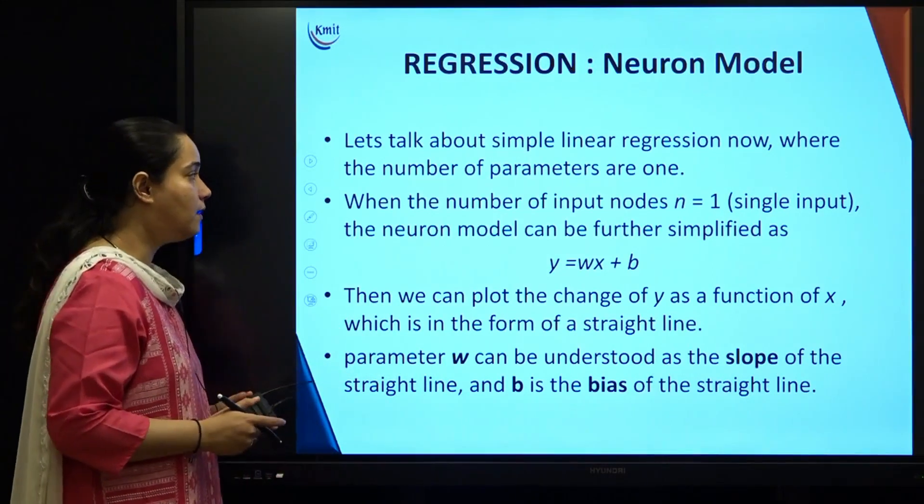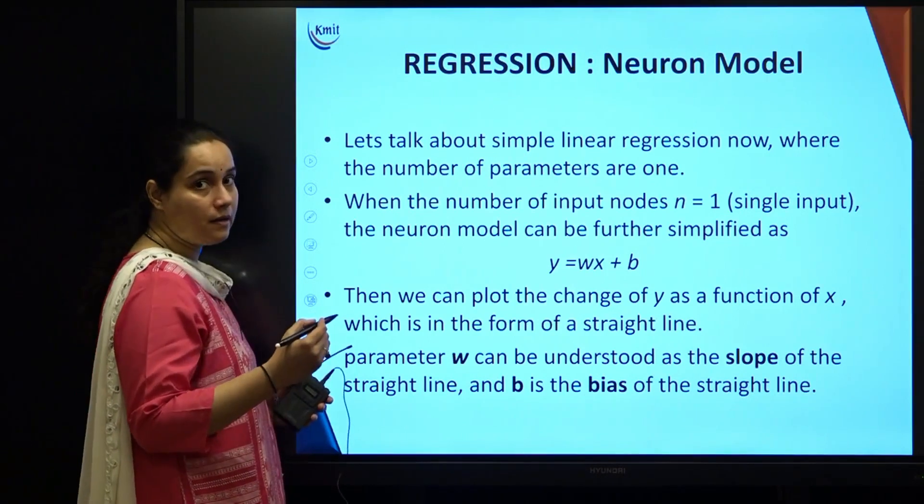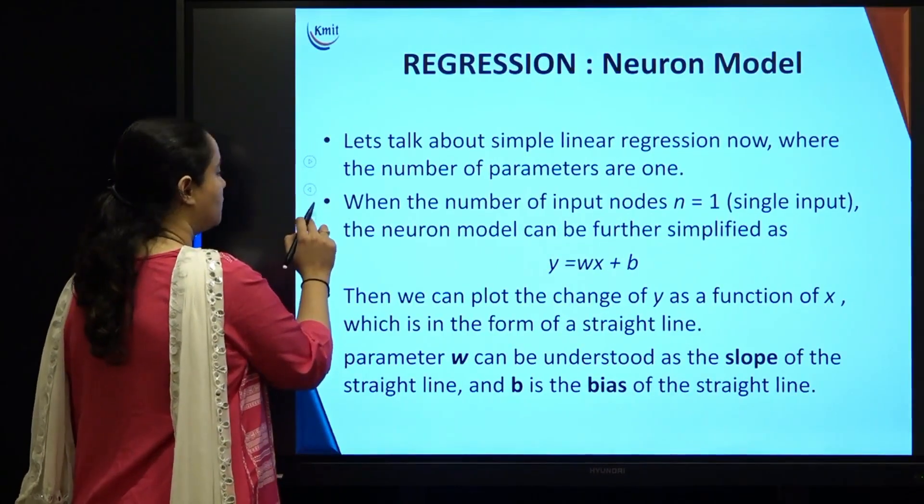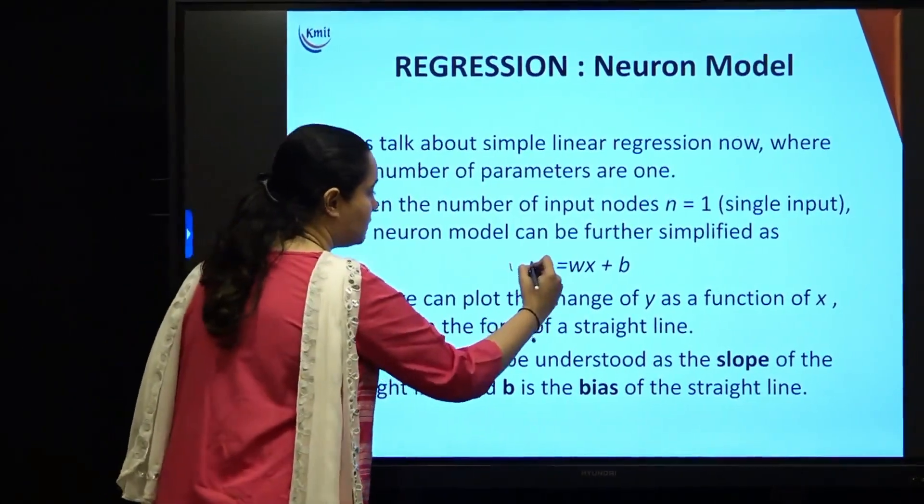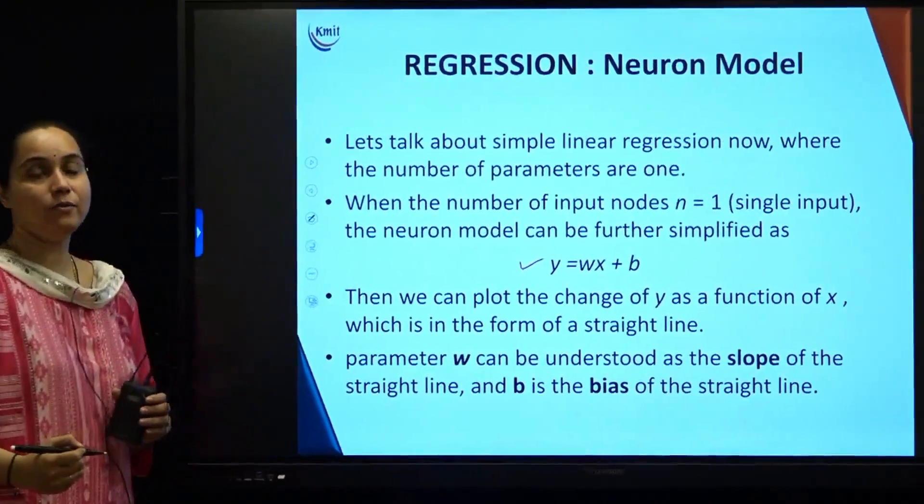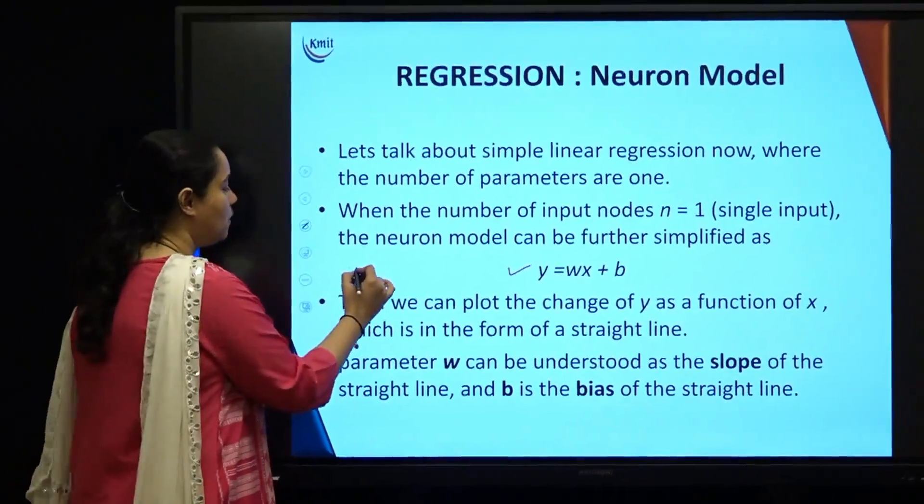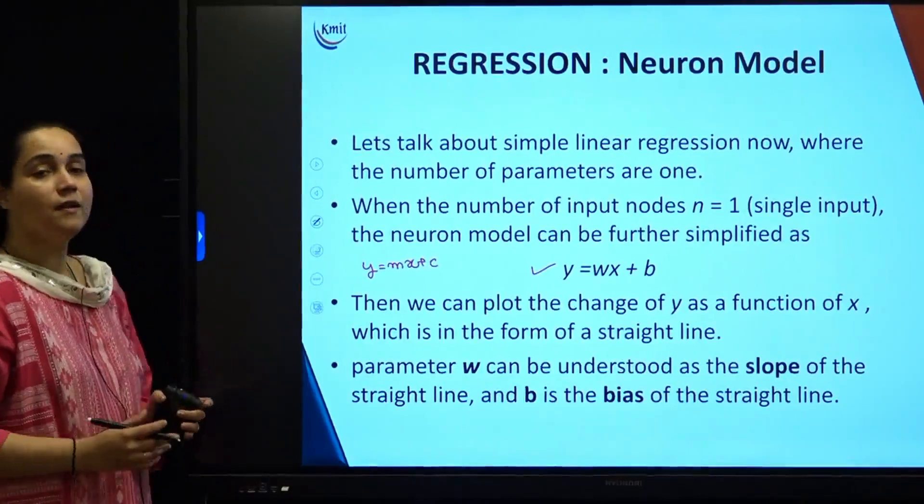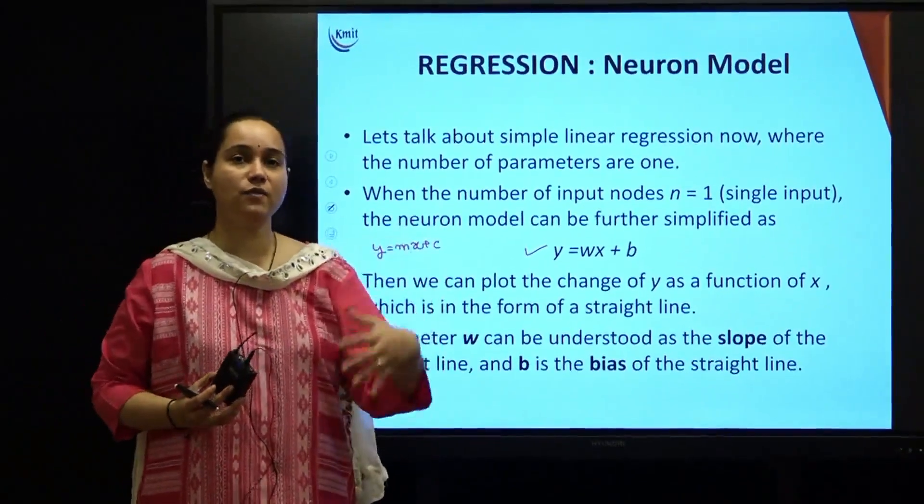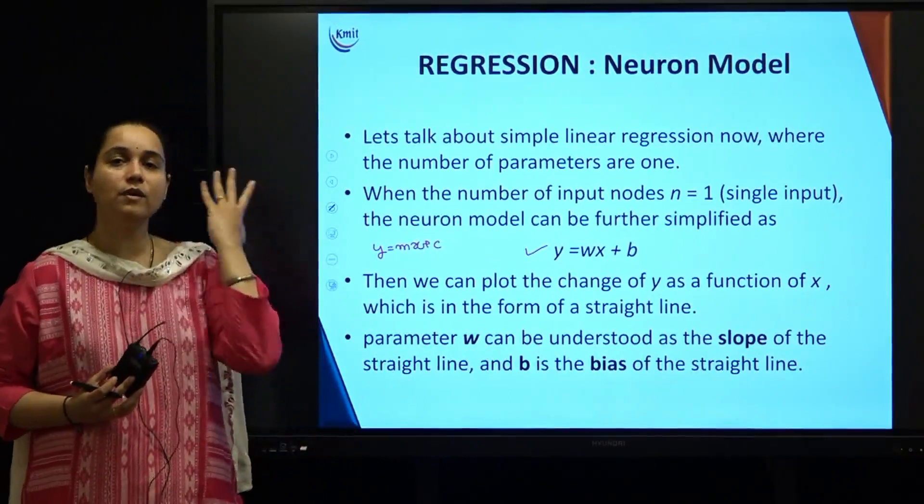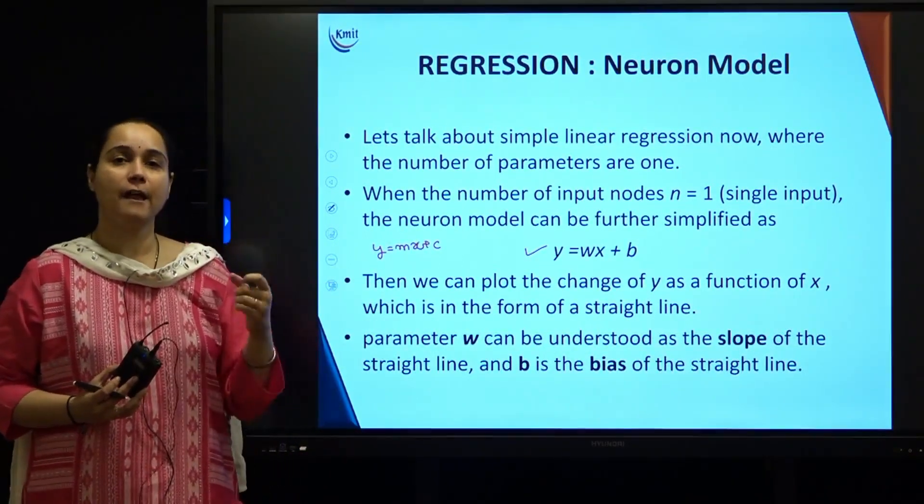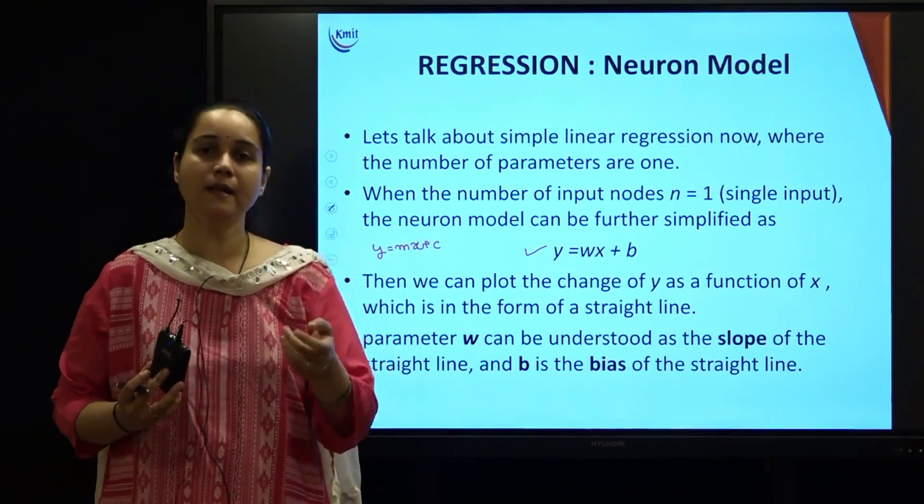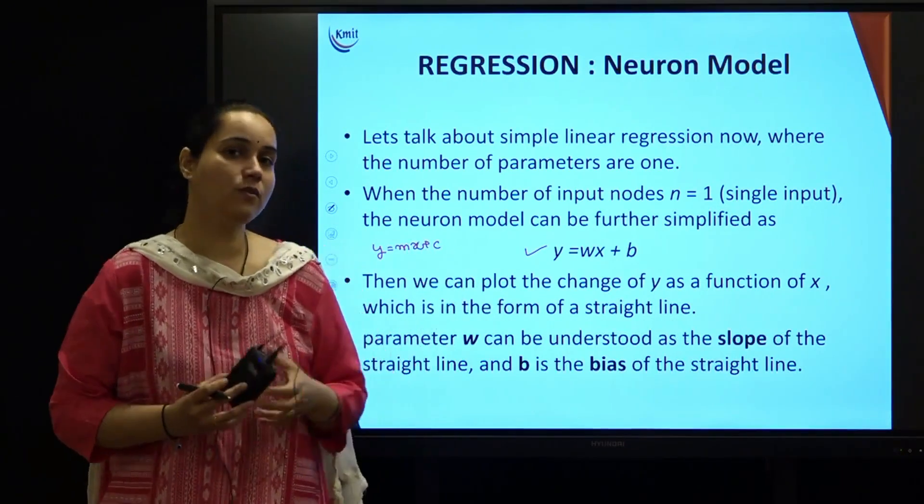I can write down a simple linear regression expression as y equals wx plus b. You know a linear model could be expressed as y equals mx plus c, which is a straight line equation. Since we already know how an artificial neuron looks like, you know the parameters are weights and bias.